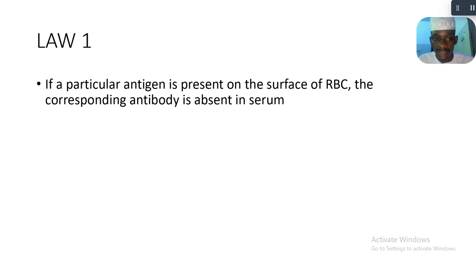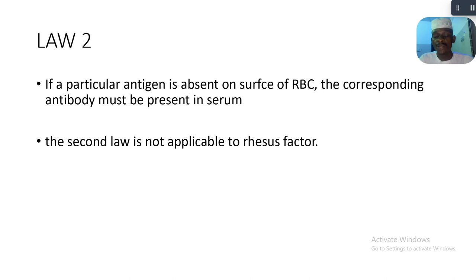Law Number One states: if a particular antigen is present on the surface of the red blood cell, the corresponding antibody is absent in the serum. If a particular antigen is present on the surface of the RBC, the corresponding antibody is absent in serum.